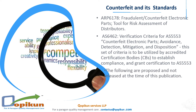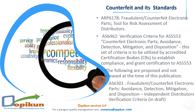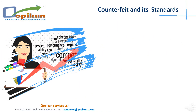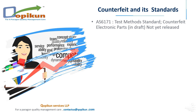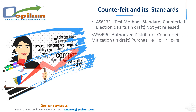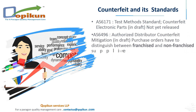The following are proposed and not released at the time of this publication: AS 6301 — Fraudulent/Counterfeit Electronic Parts, Avoidance, Detection, Mitigation, and Disposition, Independent Distributors Verification Criteria, in Draft. AS 6171 — Test Methods Standard, Counterfeit Electronic Parts, in Draft, not yet released. AS 6496 — Authorized Distributor Counterfeit Mitigation, in Draft.